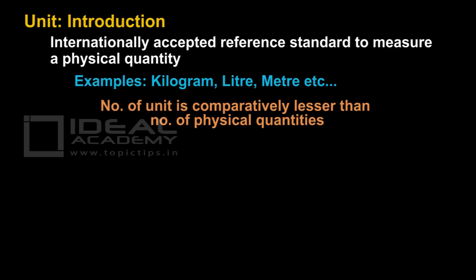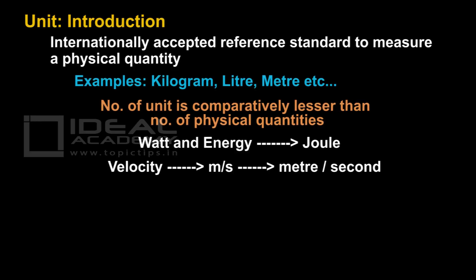So the number of units is comparatively lesser than the number of physical quantities. Why so? Many physical quantities use the same units. For example, Watt and Energy use Joule. Velocity unit is meter per second. So number of units is lesser than the number of physical quantities.